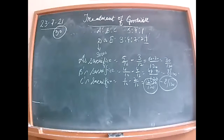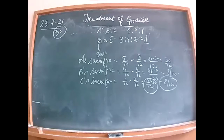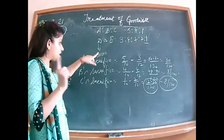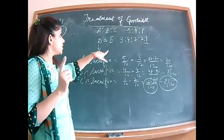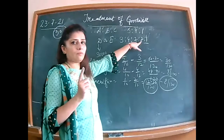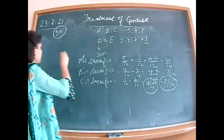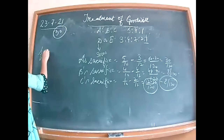At the time of admission, A and B are sacrificing while C is gaining. C will compensate the sacrificing partners. The question is: with what amount? D is bringing 30,000 goodwill for his share of 2/12. So I calculate firm's goodwill on the basis of D's share.